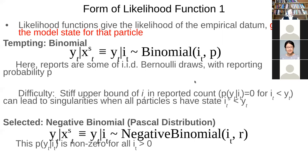The problem with the binomial is that it assigns a weight of identically zero to observing more cases than there are people infected in the model. If there are 100 people being infected, the probability of observing 101 cases is not just small — it's zero. Because there's no way, by flipping a coin 100 times, no matter how lucky or unlucky you are, that you get 101 heads.